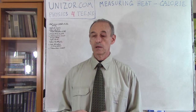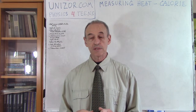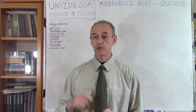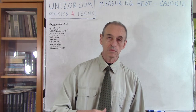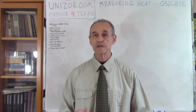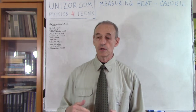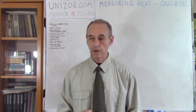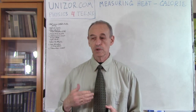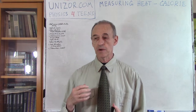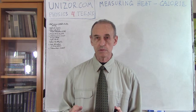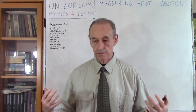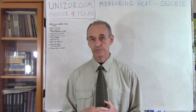So, how to measure heat? They discovered experimentally that if you take one gram of water and increase its temperature from, say, 20 degrees Celsius to 21 degrees Celsius, a certain amount of heat is consumed by that gram of water. So they decided to use this as a unit of heat — the amount of heat needed to heat one gram of water by one degree was set as the unit of heat measurement.